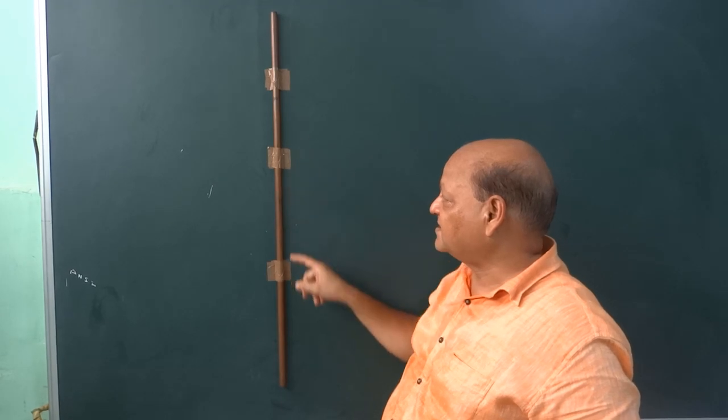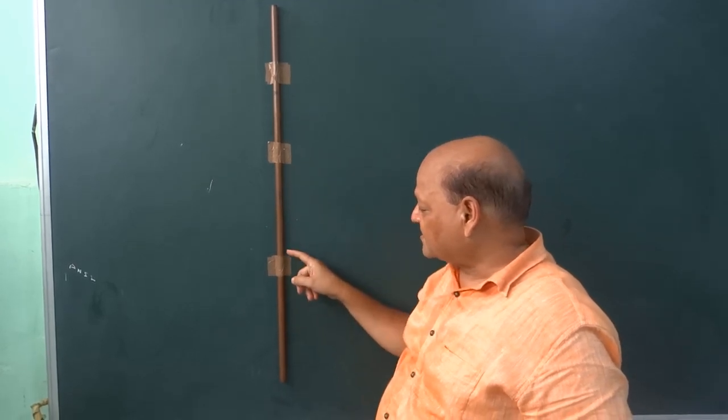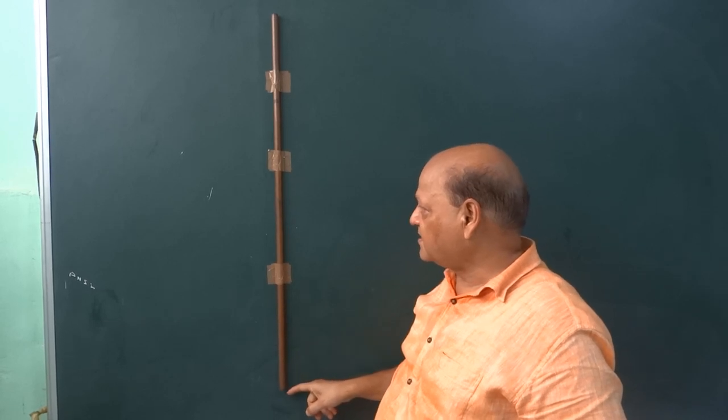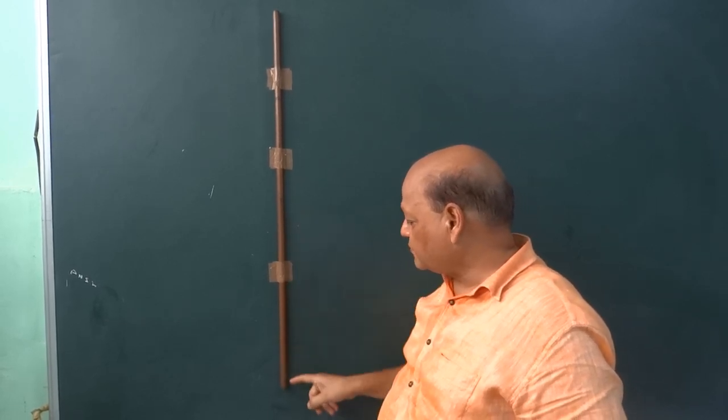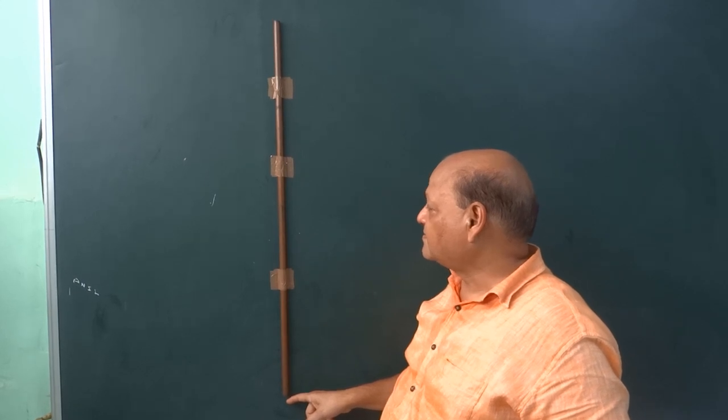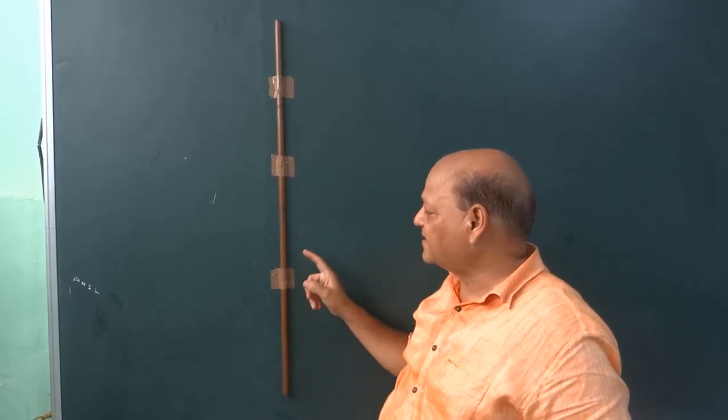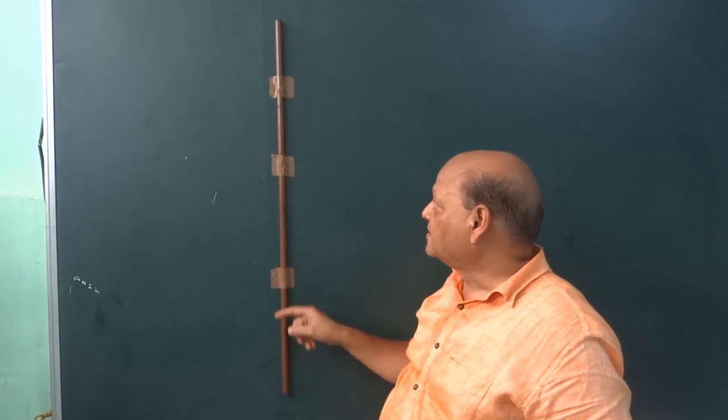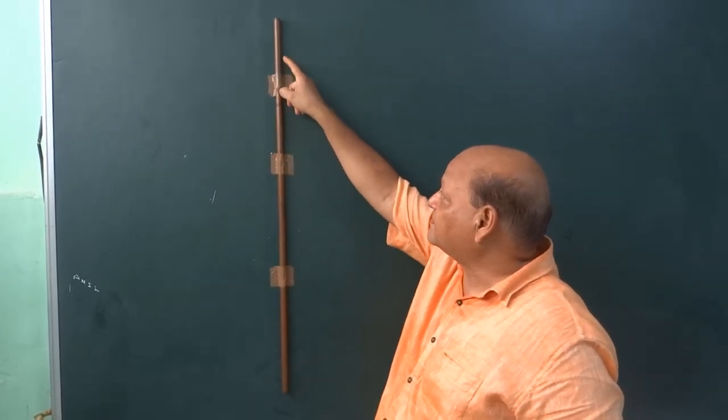However, the copper tube is still vertical. So expectedly, your spherical magnet should also move with the gravity. But it is taking too much time to come out at the other end. It means the acceleration of the spherical magnet is less than the gravity. How come this acceleration becomes less than the gravity?